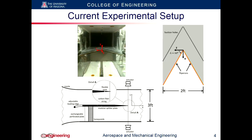A little bit about the experimental setup: we have a splitter plate with this lambda notch. We have the high speed flow coming out the top, the low speed flow coming out the bottom. We put honeycombs and screens to get the desired velocity ratio.